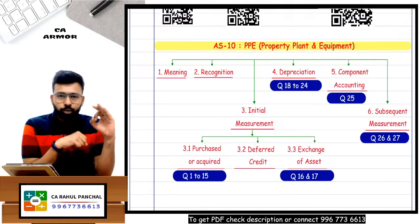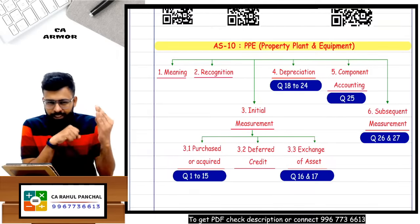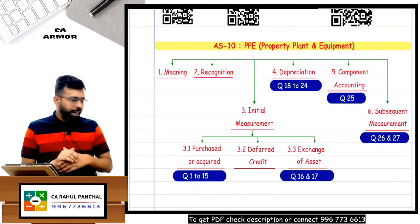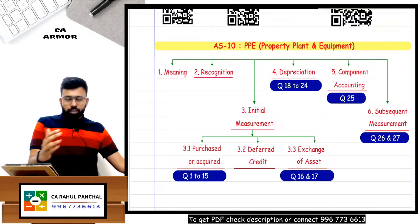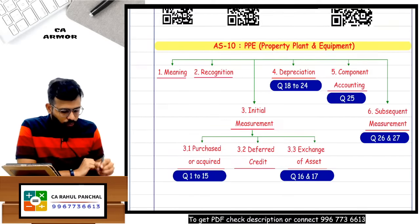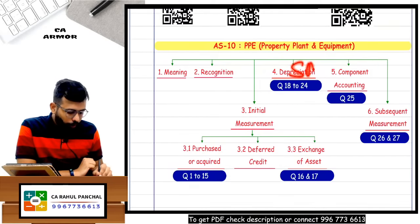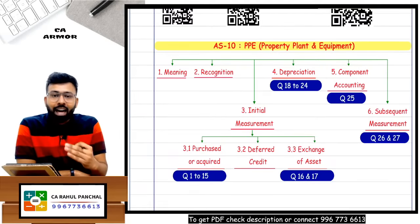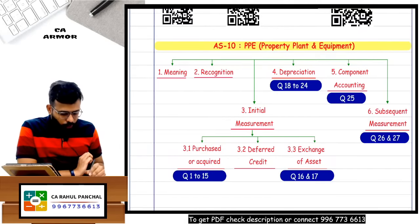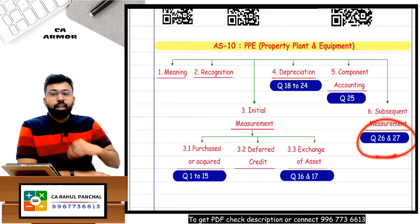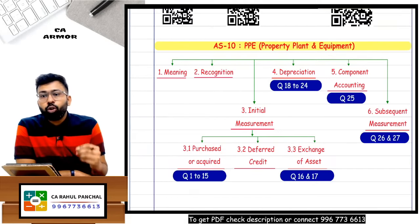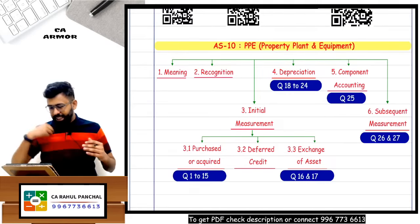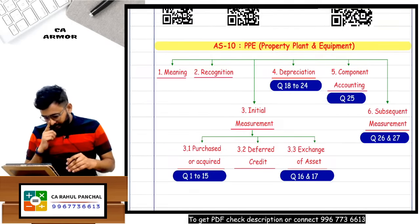Let's start with the standard AS10 - short questions from this standard. We are going to solve not only study material questions, but also RTP and past papers. In totality, we are going to solve 27 to 28 questions total.